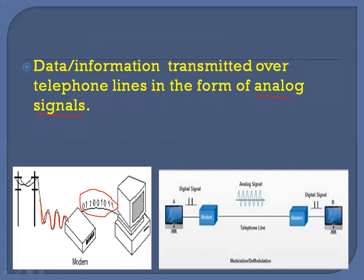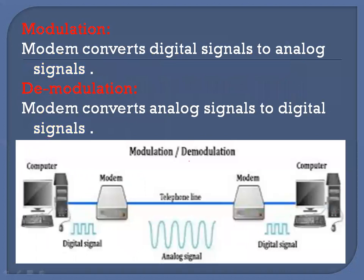In this diagram, you can see there is a modem on the sender side. This modem converts the digital signals into analog signals, which are then transmitted over the telephone lines. On the receiving end, there is a modem which converts these analog signals back into digital signals so the computer can represent the information in its memory. When the modem converts digital signals into analog signals, this process is called modulation. When it converts analog signals into digital signals, this process is called demodulation.